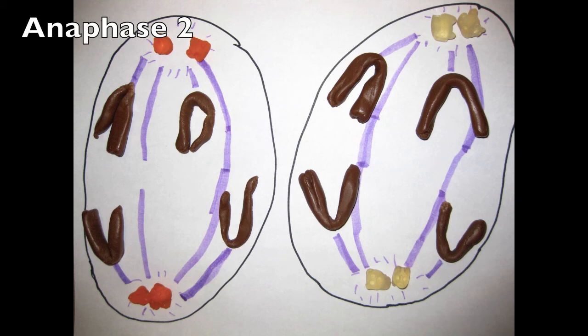In anaphase II, sister chromatids separate and move toward opposite poles. Each chromatid is now considered a chromosome.